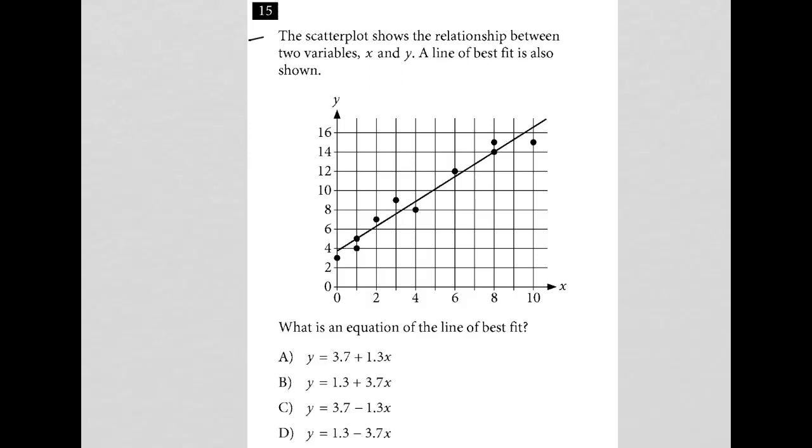So this question says the scatter plot shows the relationship between two variables, x and y. A line of best fit is also shown. So we see the line of best fit. We see the scatter plots all around the line of best fit. Some are on it, some are below, some are above. The question goes on to say, what is an equation of the line of best fit?